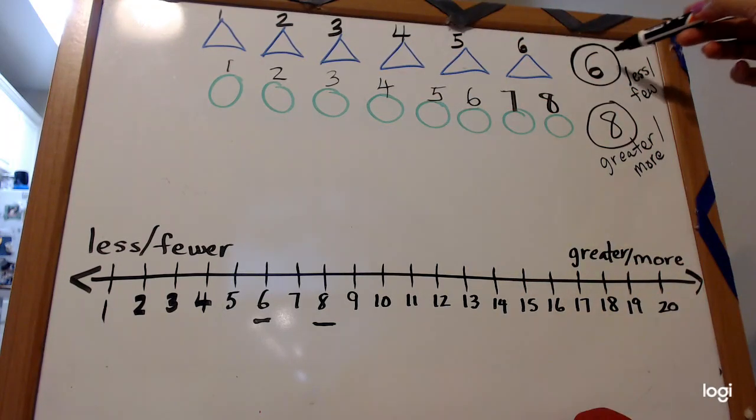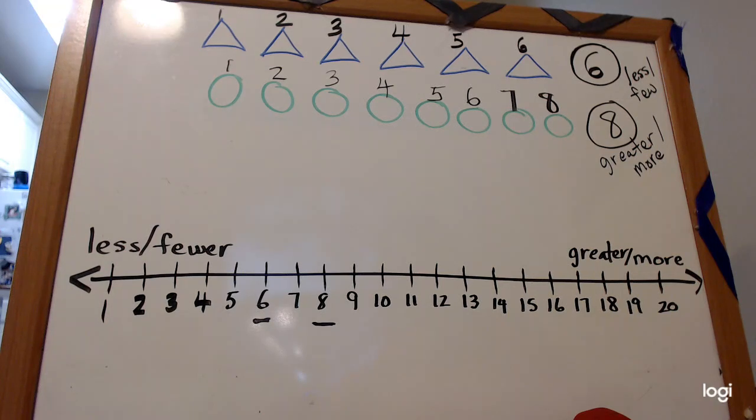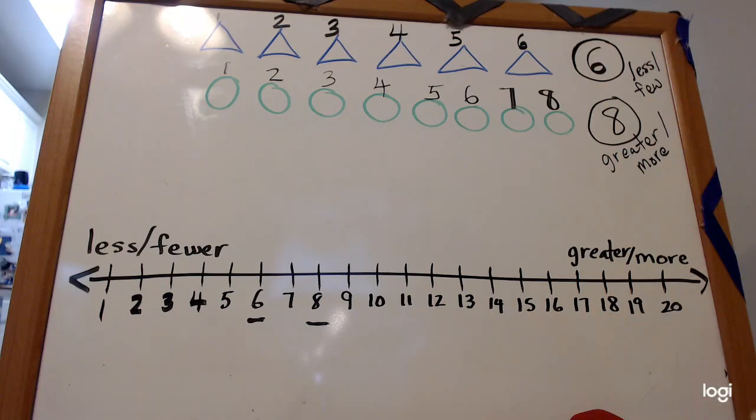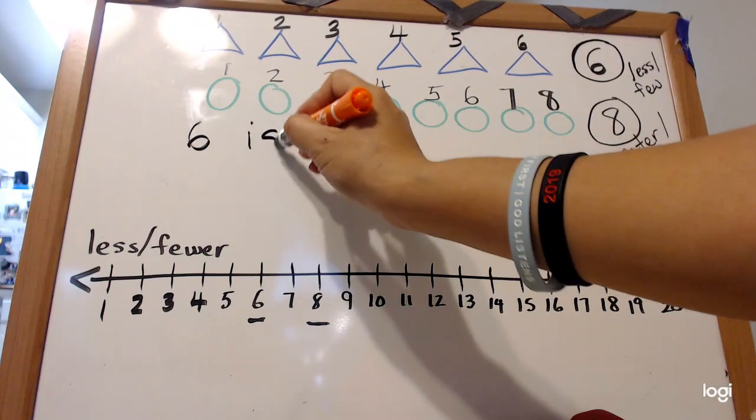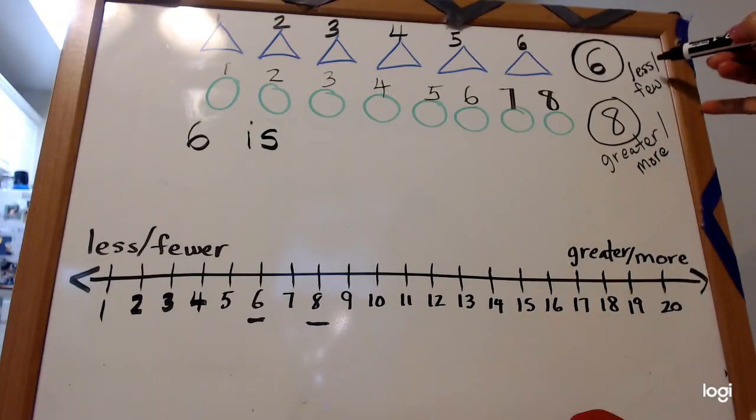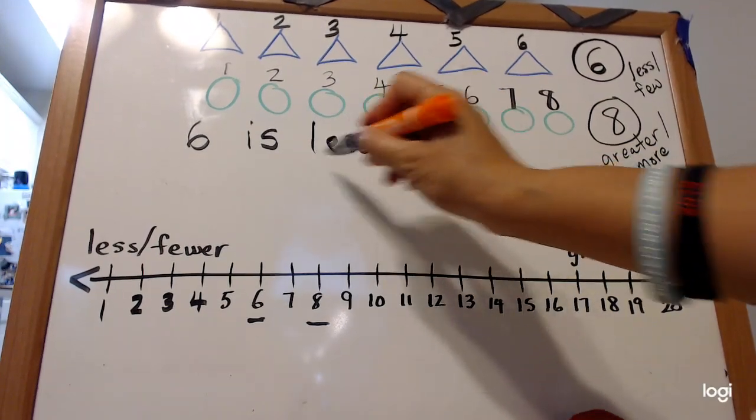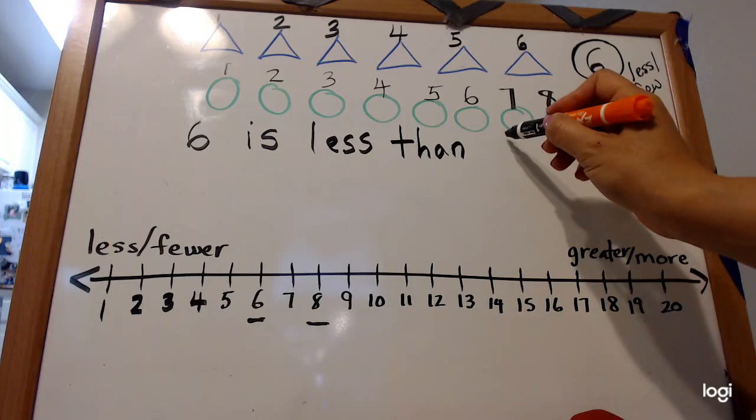Now, since we have written these and this is our strategy, it makes it easier for us to write the sentences, right? Now we can start with the number six and we can say six is what? Less. See, now it's easier since you already did the strategy, less than eight.